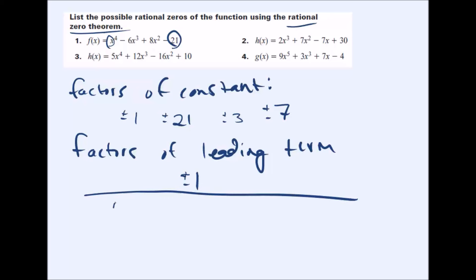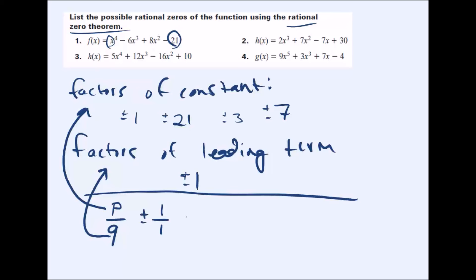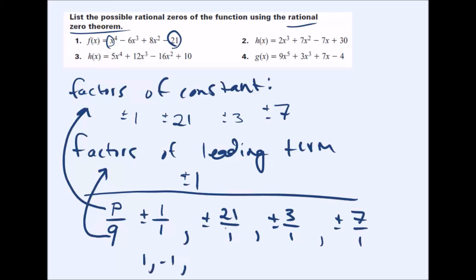Once you've listed the factors of the constant and the factors of the leading term, use the formula p divided by q, where p is the factors of the constant and q is the factors of the leading term, for each possible scenario. So we get plus or minus 1 over 1, plus or minus 21 over 1, plus or minus 3 over 1, plus or minus 7 over 1. Simplified, those are ±1, ±21, ±3, and ±7 — all the possible rational x-intercepts.